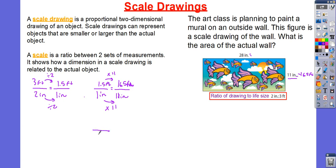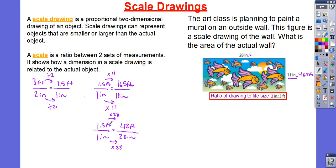Let's go ahead and try another one. One inch equals 1.5 feet. We need to figure out how much is for 28 inches, so I'm going to multiply by 28 on both sides. 1.5 times 28 is going to give me 42 feet. So, this is equivalent to 42 feet.